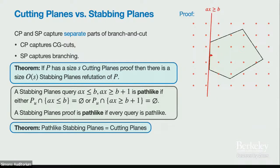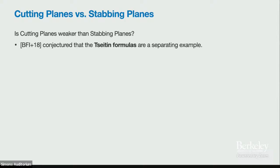It's not hard to see that path-like stabbing planes equals cutting planes. If we have a linear inequality and take a CG cut by rounding up the right-hand side, we can look at the stabbing planes branch on ax ≥ ⌈B⌉ vs ax ≤ ⌈B⌉−1. This is a valid path-like stabbing planes branch, so we can simulate each CG cut one at a time and get a path-like stabbing planes proof. So stabbing planes seems very powerful — it handles branching and can trivially simulate cutting planes.